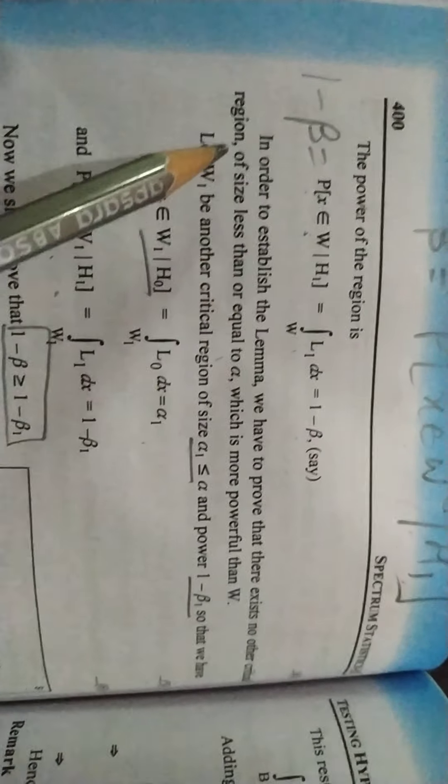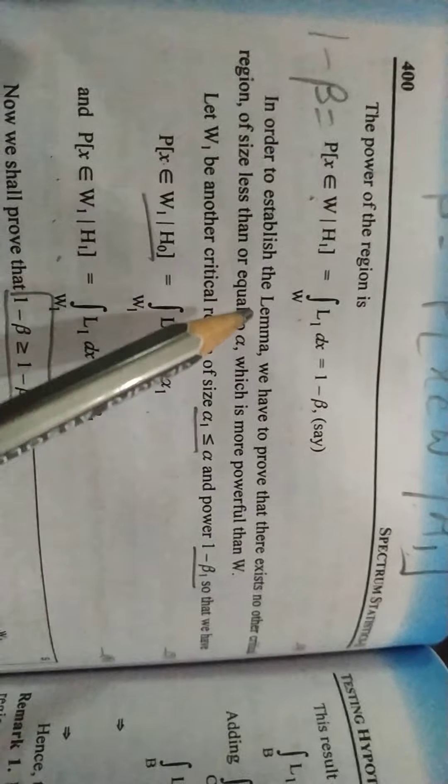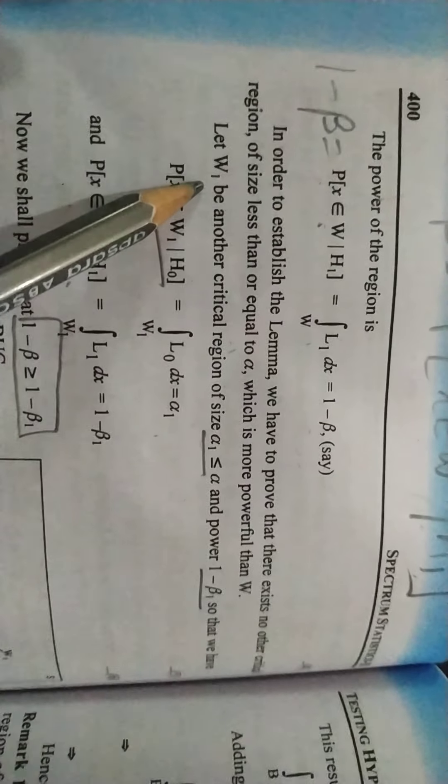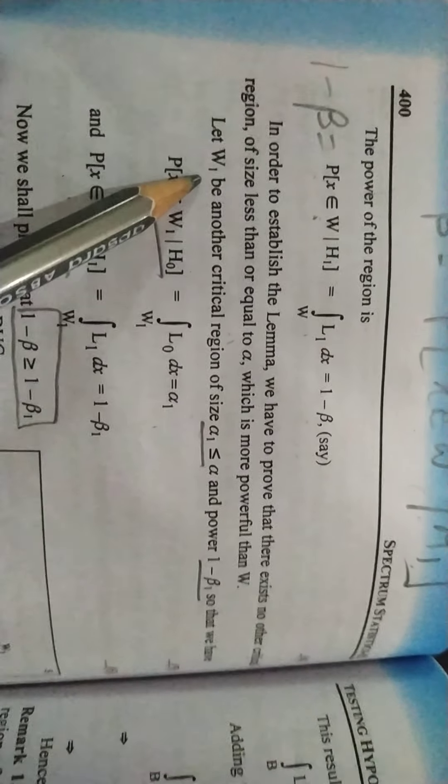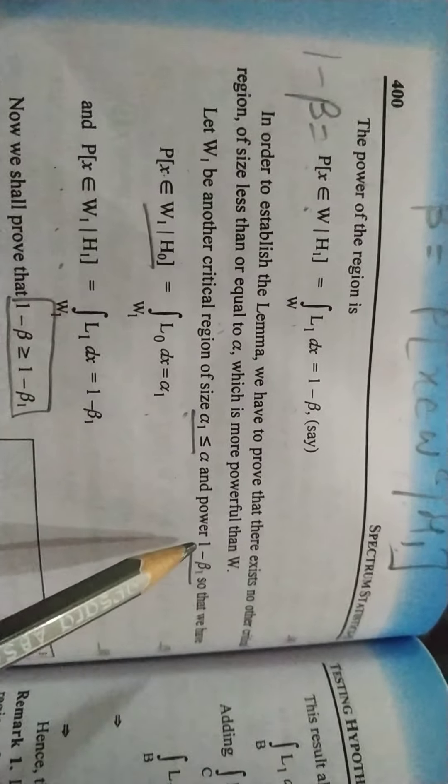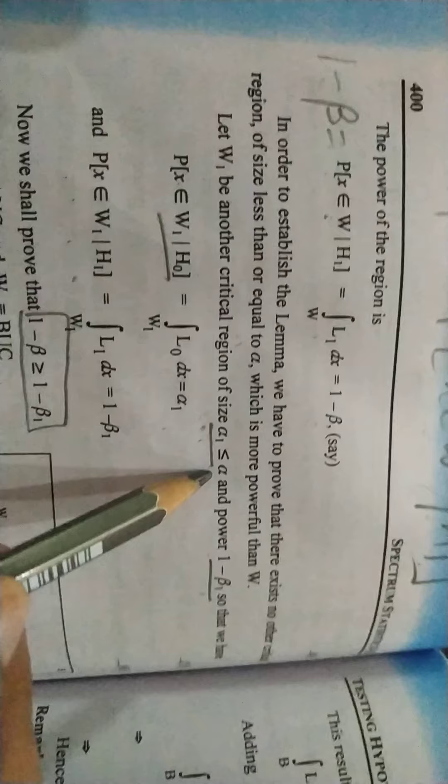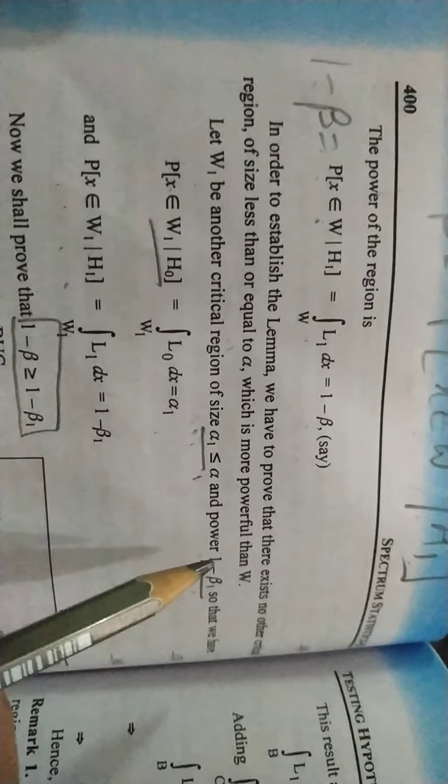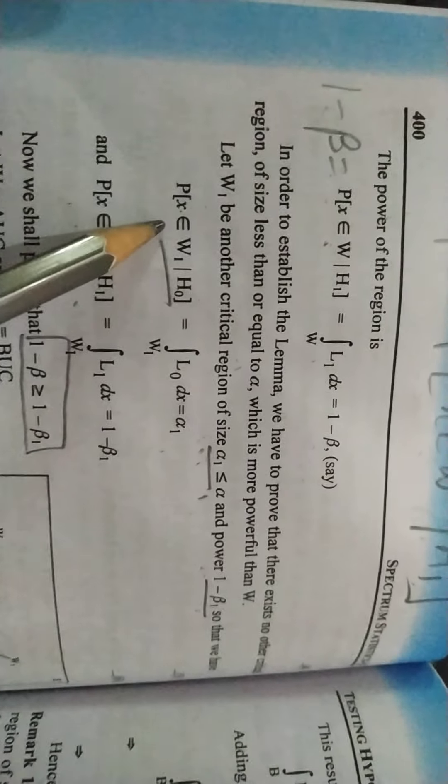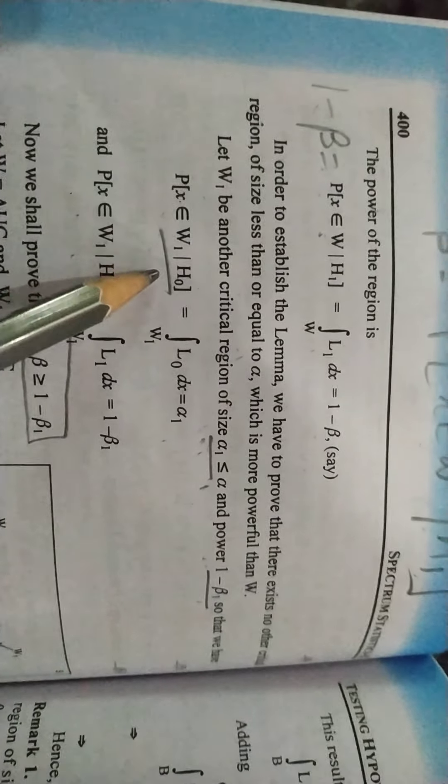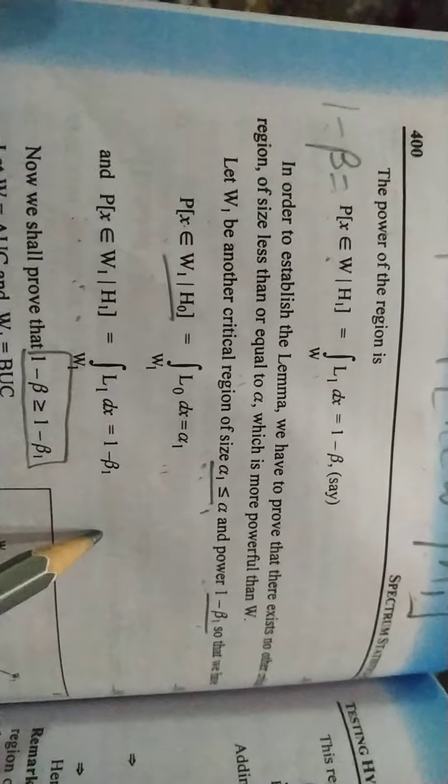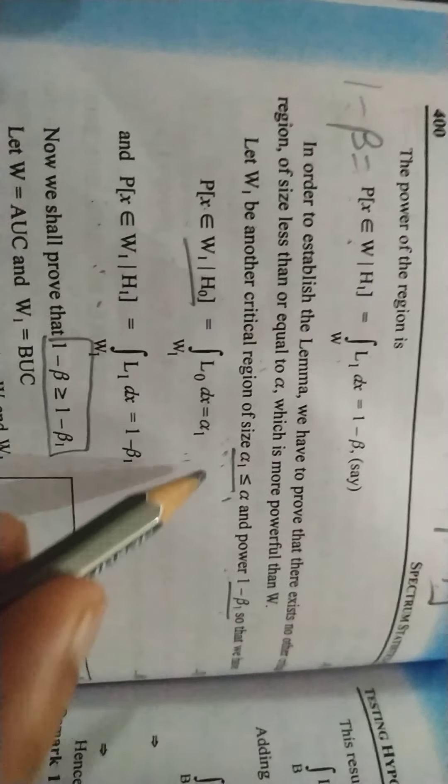That there exists no other critical region of size less than. Let us tell you that there is no other critical region of alpha. Imagine that another critical region is W1, which is alpha. And its power is how much? 1 minus beta1. The first critical region is alpha, its power is 1 minus beta. And I chose one critical region which is alpha1, and its power will be 1 minus beta1. It is alpha1 and it is 1 minus beta.